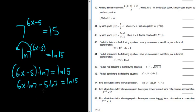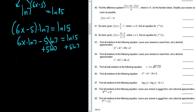We're looking for x, so now we can add 5 natural log of 7 to both sides. And so we end up with 6x times the natural log of 7 equals natural log of 15 plus 5 natural log of 7.